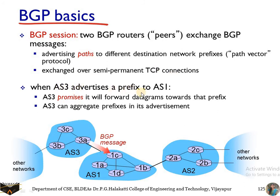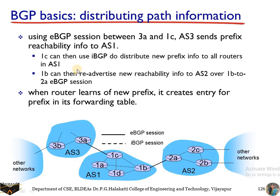Autonomous System 3 advertises its prefix to Autonomous System 1. AS3 can aggregate the prefixes in its advertisements, and the message is sent from AS3 to AS1 through the border routers — specifically from router 3A to router 1C. iBGP is internal to a particular autonomous system, shown with a dotted line, while communication between two different autonomous systems is done through eBGP sessions.